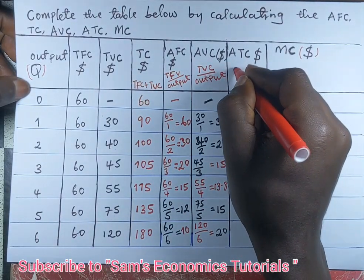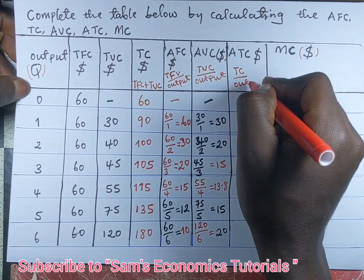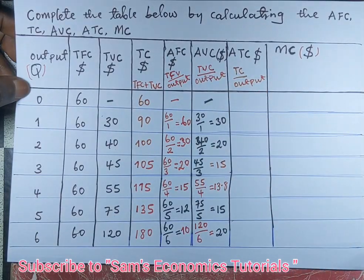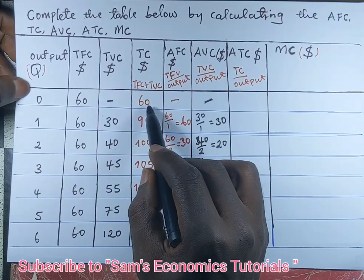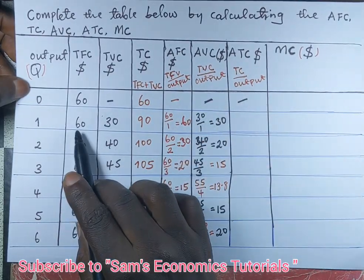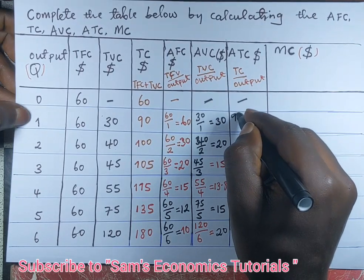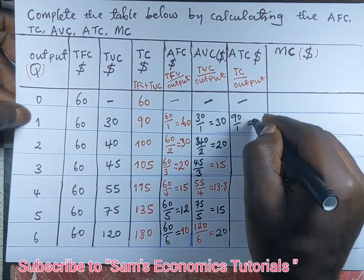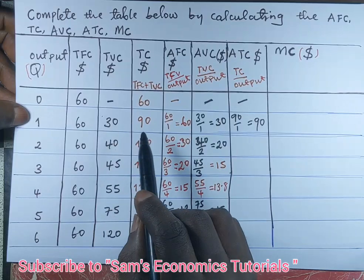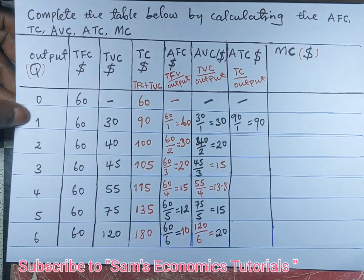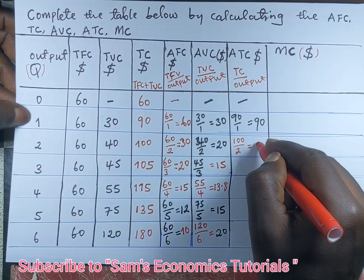Average total cost is equal to total cost divided by output. At Q=0, no unit was produced while total cost was 60, so we leave that empty. When one unit is produced, total cost is 90, so we divide 90 by 1, giving 90 US dollars per unit. When two units are produced, total cost is 100, so we divide 100 by 2, giving 50 US dollars per unit.